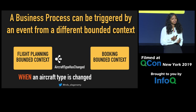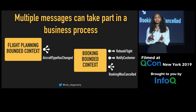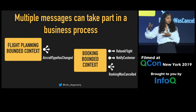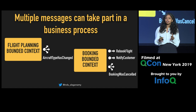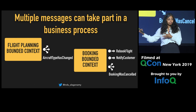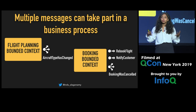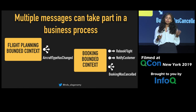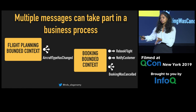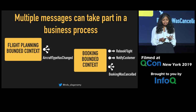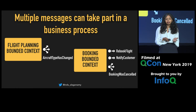A business process could involve multiple messages in the same process. The booking context receives the 'aircraft type has changed' event, but internally might need to do a lot of things: rebook the flight and notify the customer. What happens when the customer says they don't want it and cancel? There are a lot of events participating in the same process. When you have many messages participating, you may need state involved — because based on state, if the customer canceled, you don't need to send them a rebooking email.